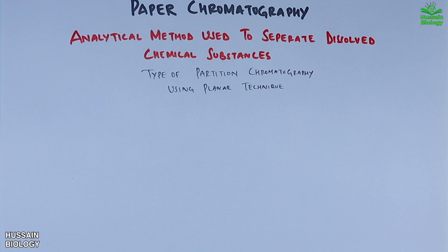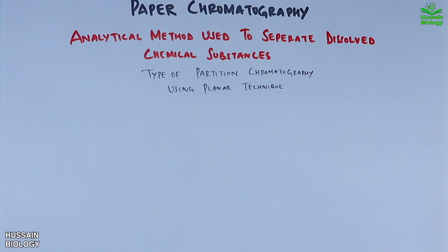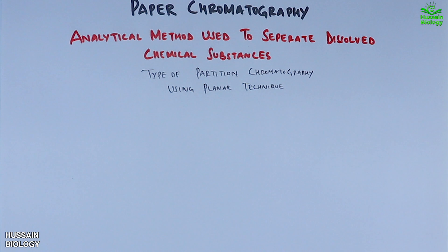In partition chromatography, the substances are partitioned or distributed between two liquid phases. The two phases here are water and a mobile phase like methanol. During chromatography, some substances stick more with the water than with the mobile phase, and we get the separation.